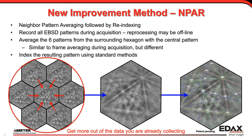The routine I'm going to be talking about today we call NPAR — neighbor pattern averaging followed by re-indexing. What we do is record all the EBSD patterns during acquisition. NPAR can be done during acquisition but usually it's done by reprocessing the data sets offline. The logic is that you average the six neighboring patterns with the central pattern, giving an average of all seven patterns around that central pattern. When you average those patterns, the noise gets averaged out, and the signal-to-noise increases so that the pattern quality gets better. The advantage is you only have to do a single exposure.